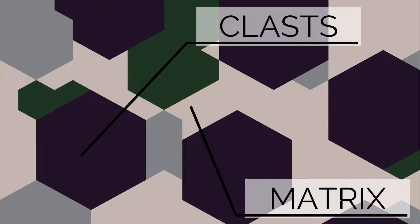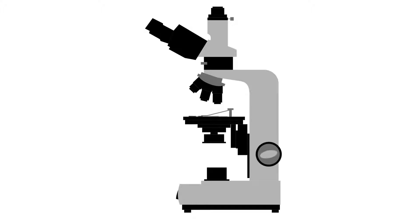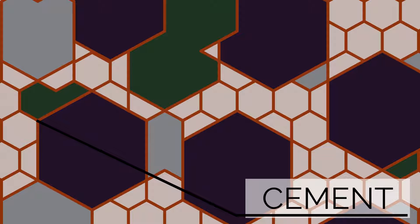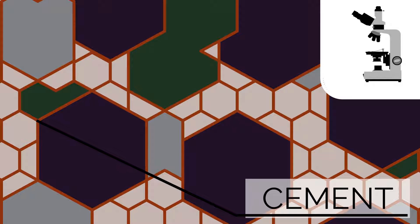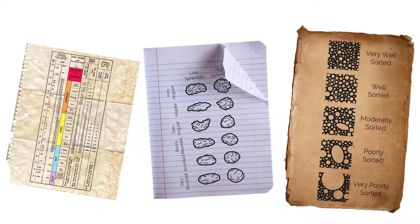The clast composition can be determined by observation or chemical analysis. The cement keeps the rock together, but isn't always present — sometimes there'll be a matrix of small grains. The cement's composition can be determined with the same analysis. The size, shape and sorting are determined by reference charts. Size can be measured as fine, medium or coarse, in millimetres or in the phi scale. Shape and sorting are more qualitative, although there is a method to quantify the latter.